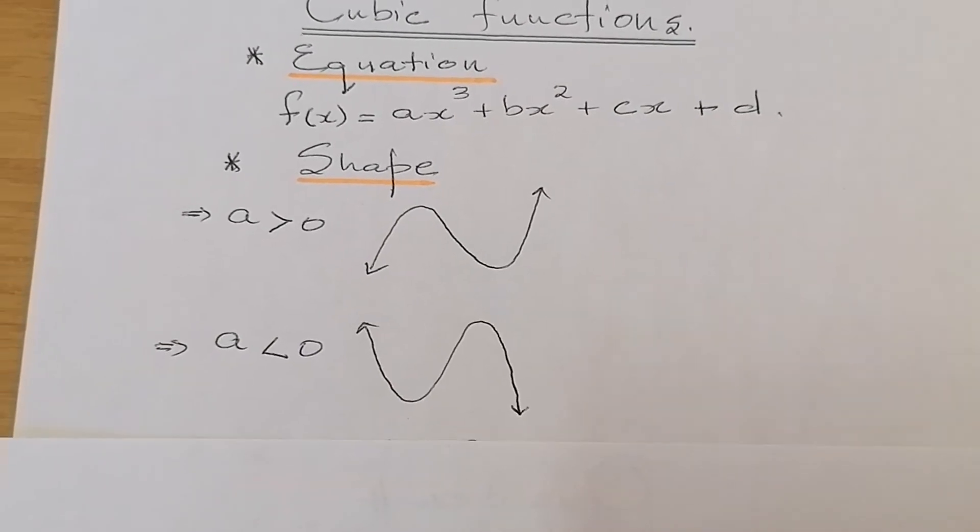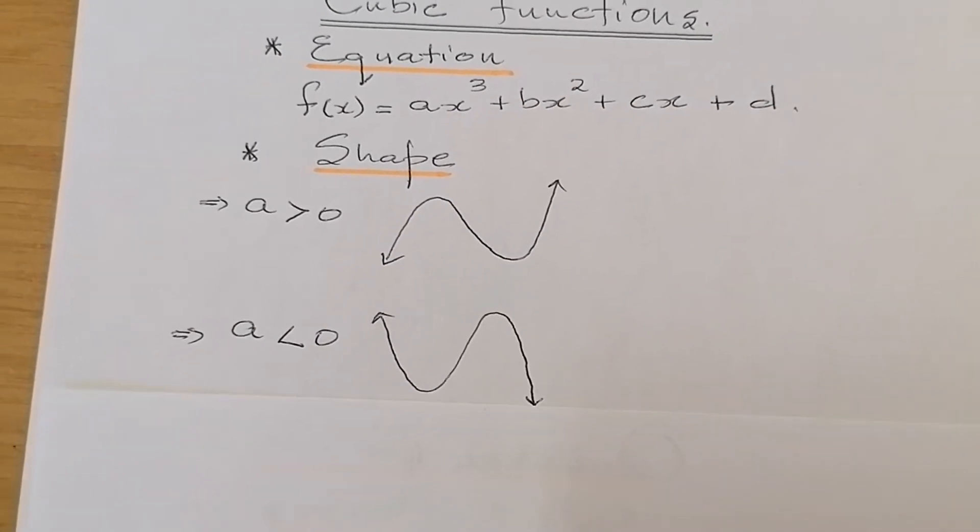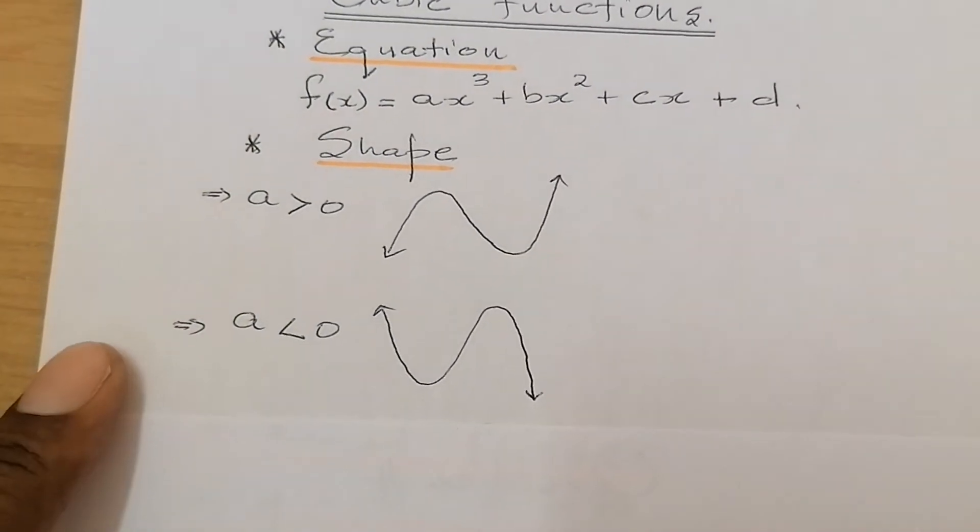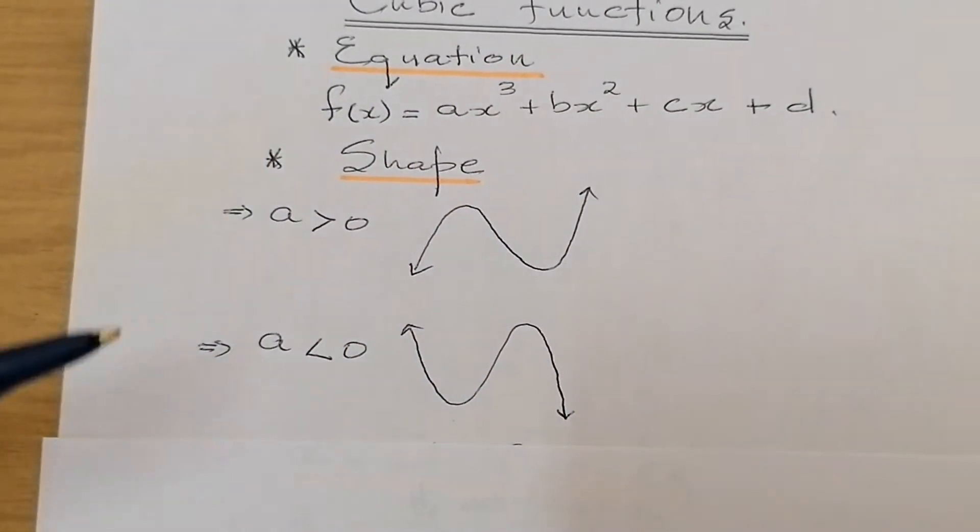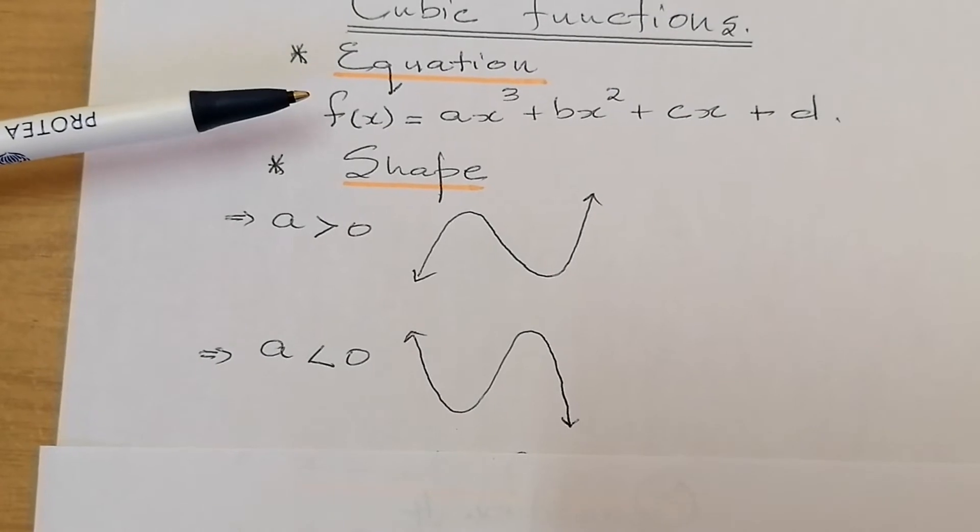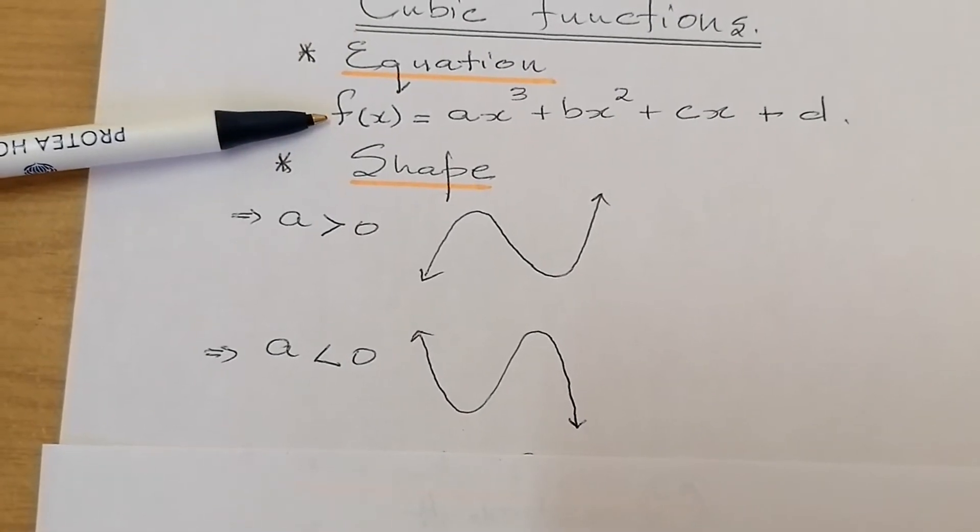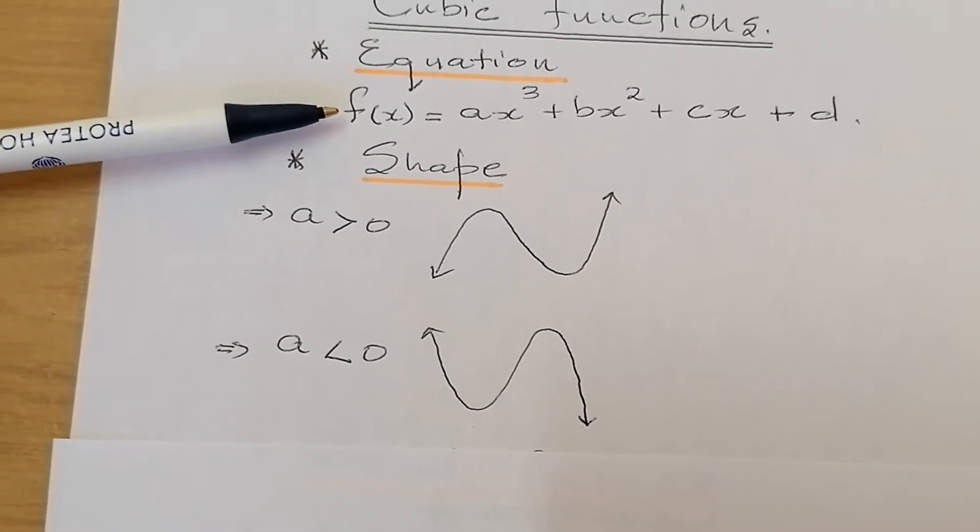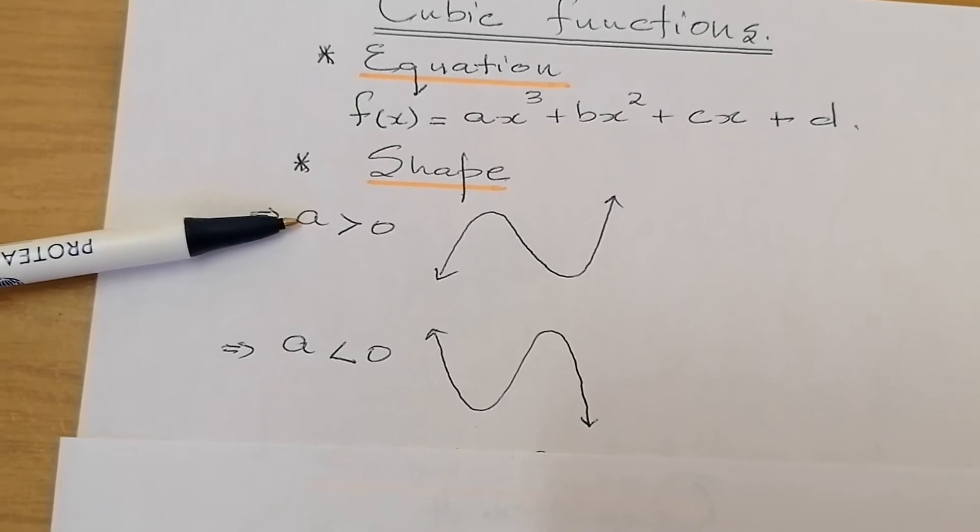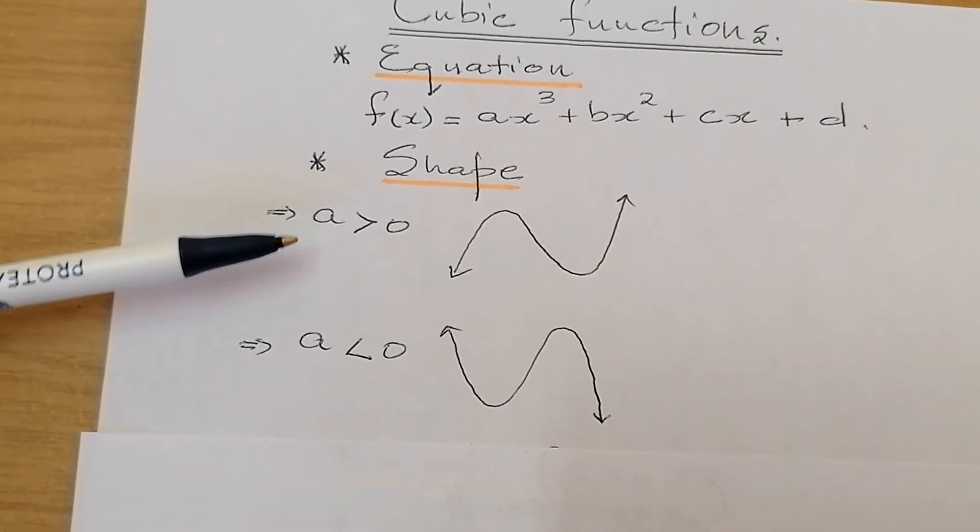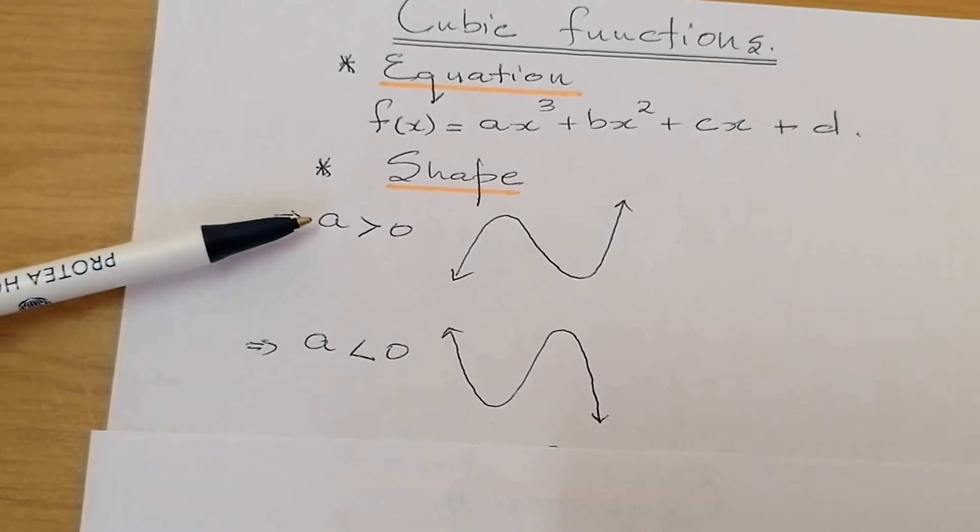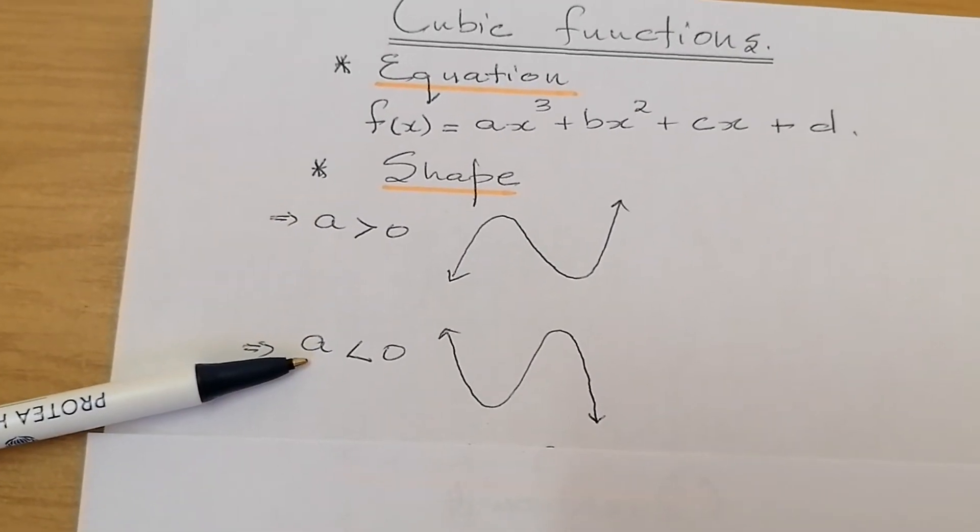When a is negative, this is the shape that you are expecting. Folks, it is very important to note the fact that this is telling you that it is a cubic function. Parameter a is telling you how your graph should look like when a is positive, when a is negative.